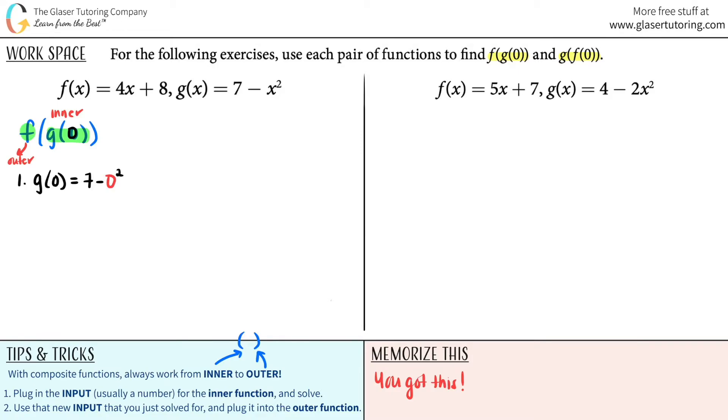And now all we've got to do is do that math. 7 minus 0 squared, 0 squared is 0, 7 minus 0 is just 7. So g of 0 equals 7. So now I will use that new input. It was the output, but now I'm going to plug it back in that we just solved for and plug it into the outer function. So that's number 2.